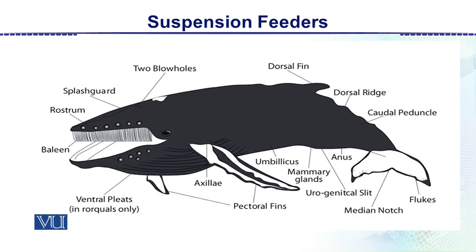In the next diagram, there is a very big, huge animal which is a whale. It is a whale, not a fish — it is a mammal. The whale takes in a lot of water into its mouth, and then the water goes out, and whatever food particles remain are entangled and become the food of this huge animal. These are different examples to explain suspension feeding.